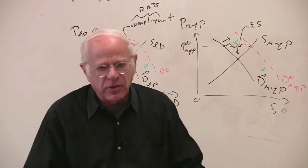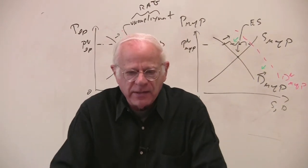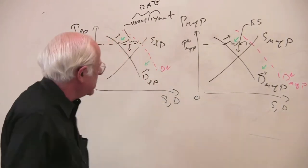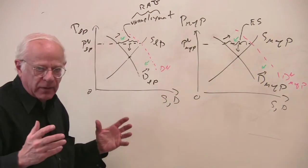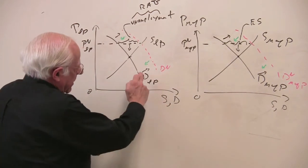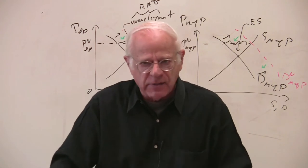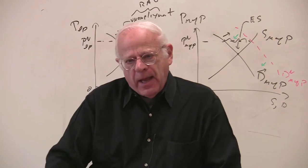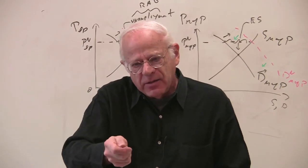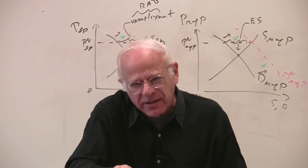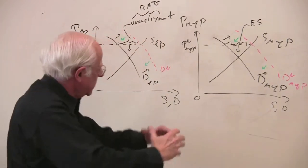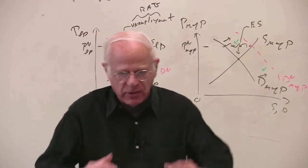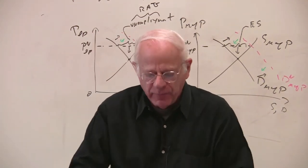The excess supply of means of production likewise pushes down prices in the market. Putting it all together: expansion causes a crisis because of rising input prices, and that crisis serves to correct itself by diminishing demands for labor power and means of production and pushing down the very prices that caused the crisis.